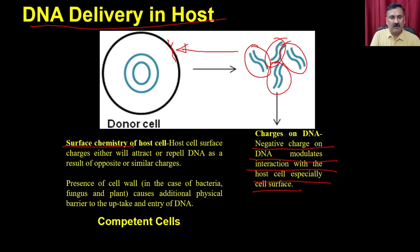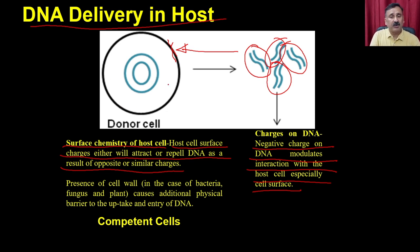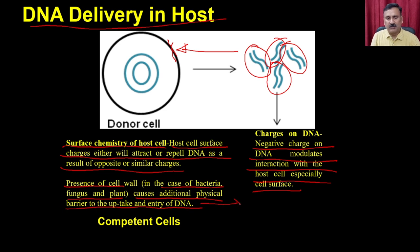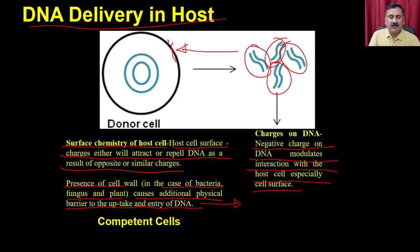The host cell surface chemistry will either attract or repel DNA as a result of opposite or similar charges. If the cell surface is positively charged, it attracts the DNA; if negatively charged, it repels the DNA. The presence of a cell wall in bacteria, fungi, or plants causes an additional physical barrier to cellular uptake. So the entry of DNA is not a facilitated process — it has multiple barriers and hurdles, all of which must be overcome by preparing competent cells.